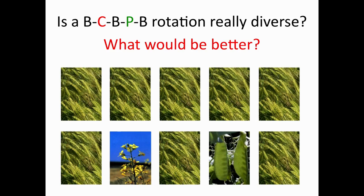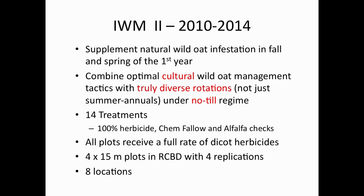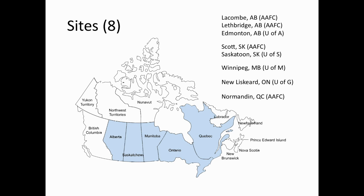What's better than a canola-barley-pea rotation? Obviously, if you're after wild oats you have to change up the life cycle a bit—we didn't do that in that study. So in our second study, we put in a more diverse rotation including winter cereals and alfalfa as a true perennial. We did this at eight sites to get a good look, and we're just in our final year getting some pretty good data.